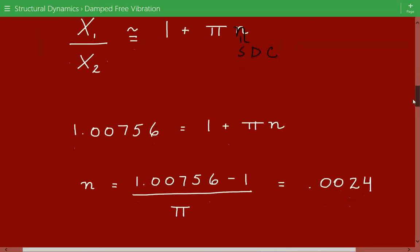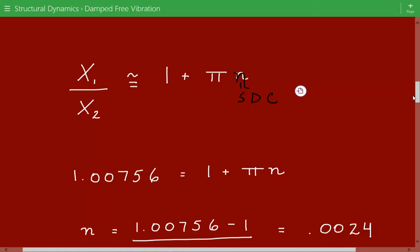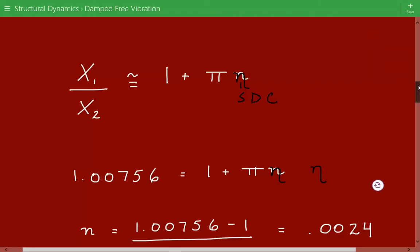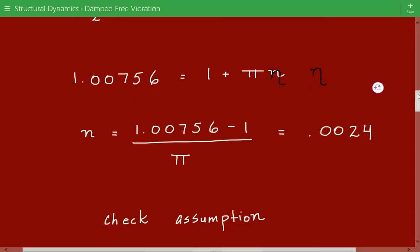So we have 1.00756 equals 1 plus pi times eta. I wrote n, but it's really a Greek letter, so it should be like that. And so the structural damping coefficient equals 0.0024.